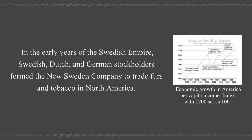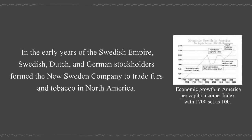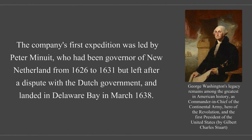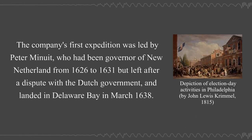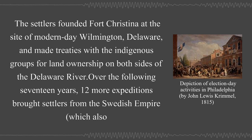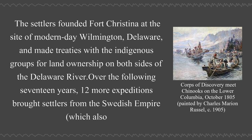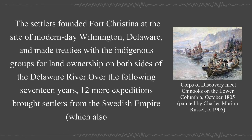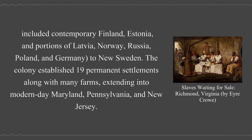In the early years of the Swedish empire, Swedish, Dutch, and German stockholders formed the New Sweden Company to trade furs and tobacco in North America. The company's first expedition was led by Peter Minuit, who had been governor of New Netherland from 1626 to 1630, but left after a dispute with the Dutch government and landed in Delaware Bay in March 1638. The settlers founded Fort Christina at the site of modern-day Wilmington, Delaware, and made treaties with the indigenous groups for land ownership on both sides of the Delaware River. Over the following 17 years, 12 more expeditions brought settlers from the Swedish empire, which also included contemporary Finland, Estonia, and portions of Latvia, Norway, Russia, Poland, and Germany to New Sweden.